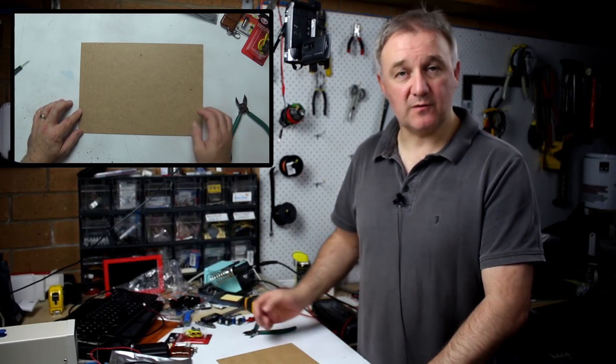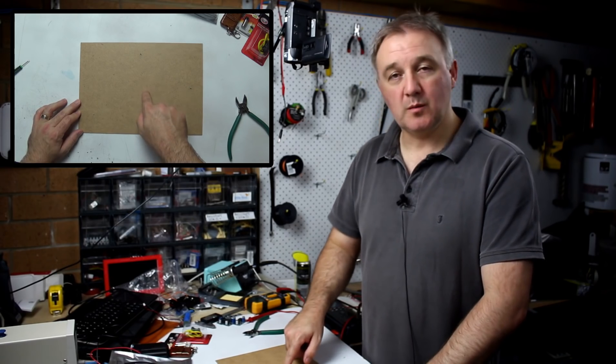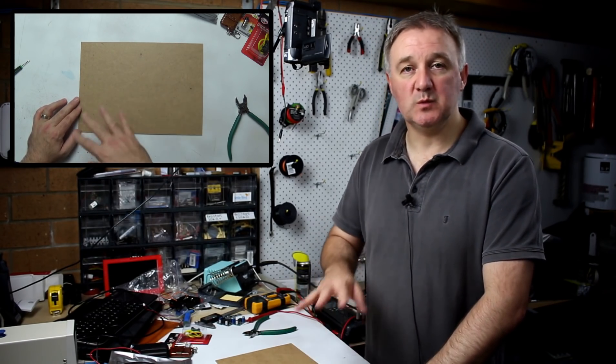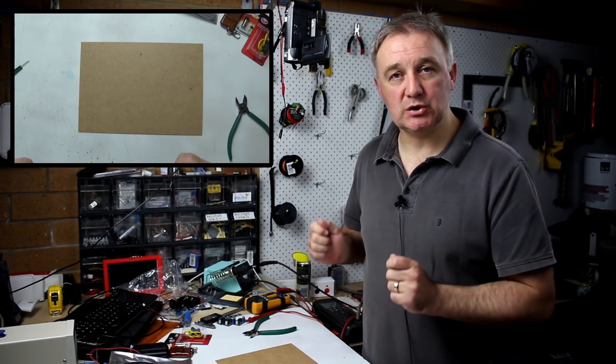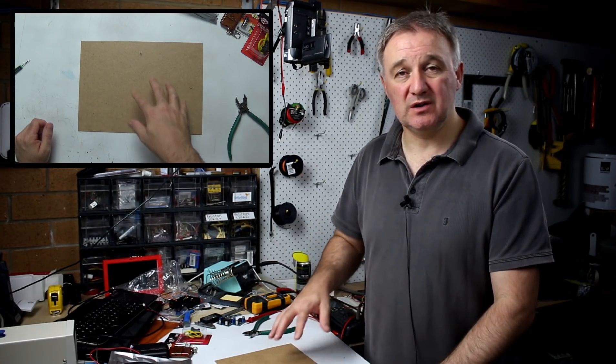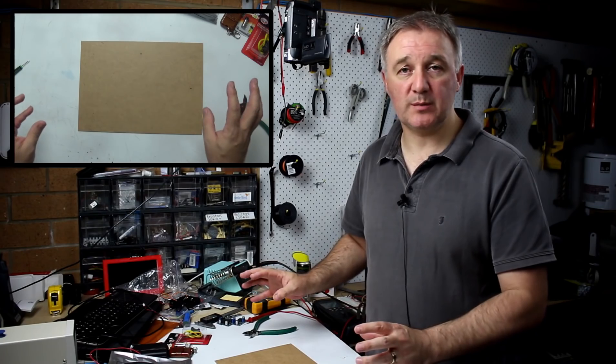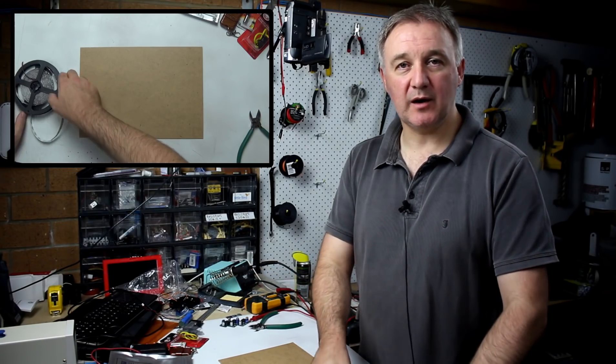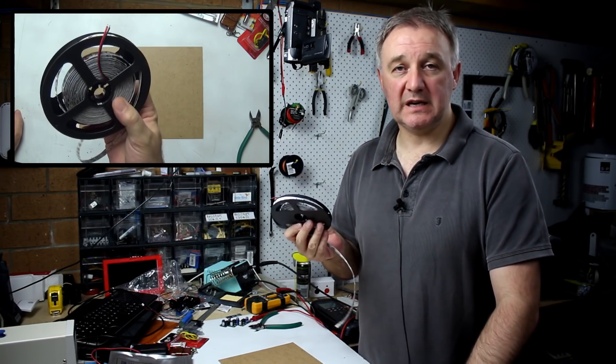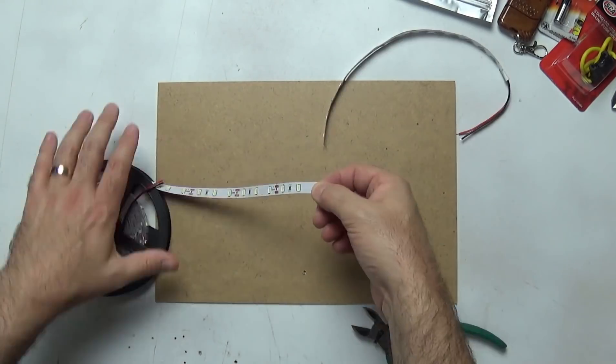Okay, so at this point this is where this differs from the previous build, link to that in the video description. Previously we just ran our rows of LEDs and we did one large panel with only two connections for positive and negative power. In this instance we're actually going to divide that up into four so each little section is controllable separately. So we're going to cut our roll of 300 LEDs into 20 separate strips, 15 LEDs per strip.